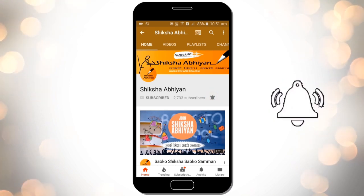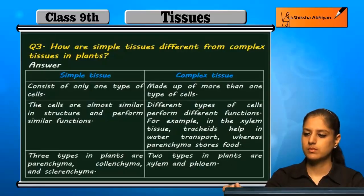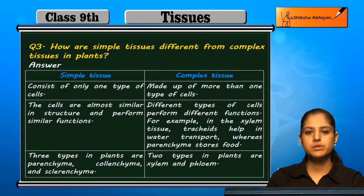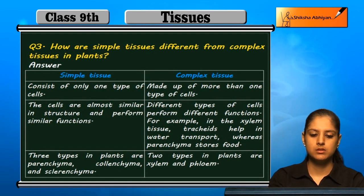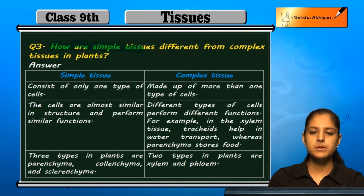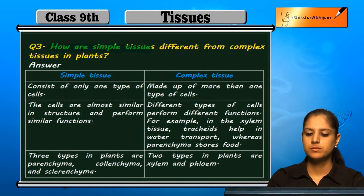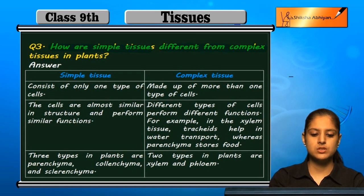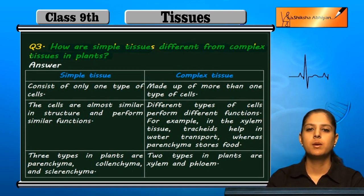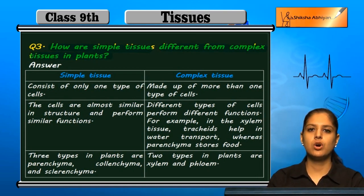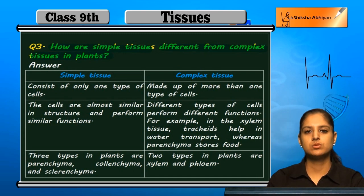Question number three: How are simple tissues different from complex tissues in plants?